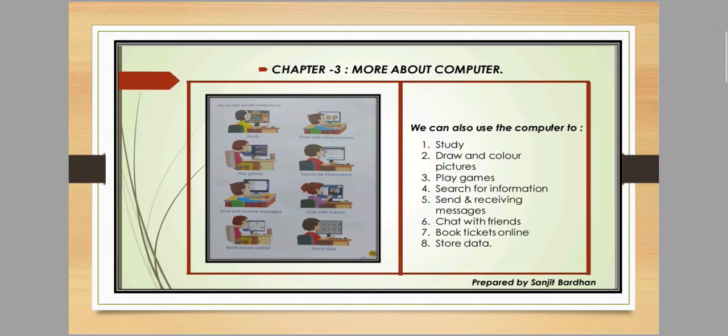Next is draw and color pictures. There is a program called MS Paint — we can easily draw pictures and color them using the computer. Next is play games — we all use the computer to play games.